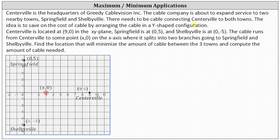Centerville is located at (9, 0) here on the coordinate plane. Springfield is at (0, 5) up here on the Y-axis, and Shelbyville is at (0, -5) down here on the Y-axis. The cable runs from Centerville to some point (X, 0), labeled here on the X-axis, where it splits into two branches going to Springfield and Shelbyville.